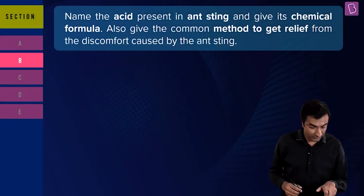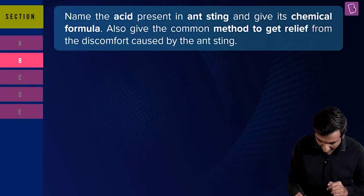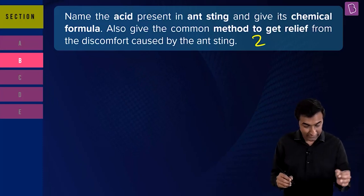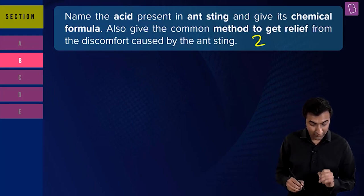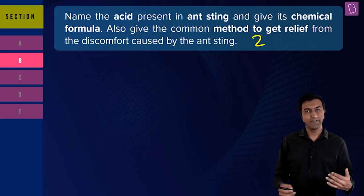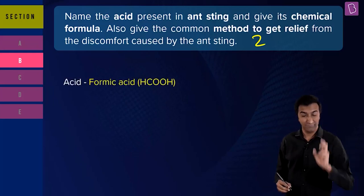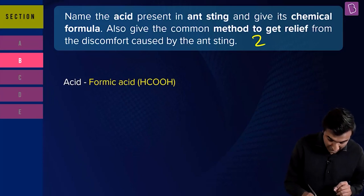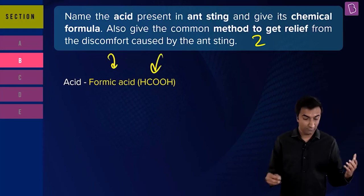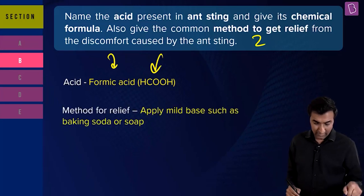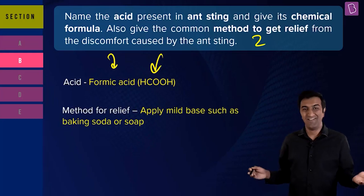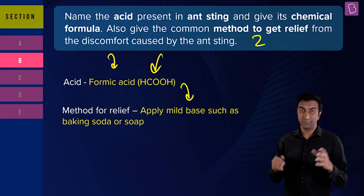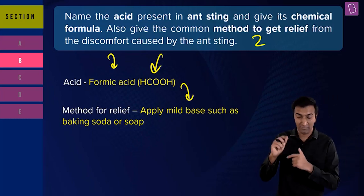Let's look at a question from Section B — a two-marker, about 40 words. The question: 'Name the acid present in ant sting and give its chemical formula. Also give the common method to get relief from the discomfort caused by the ant sting.' The acid present is formic acid (HCOOH). For relief, use the idea of neutralization — apply a mild base such as baking soda or soap. The marking scheme gives half a mark for each part.